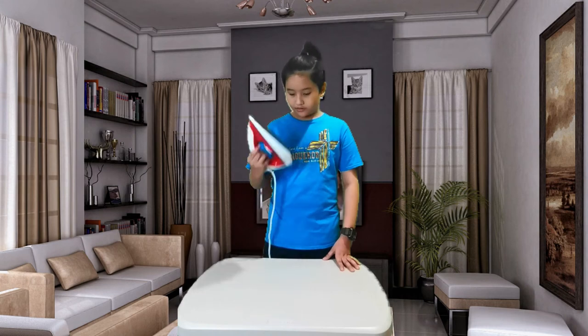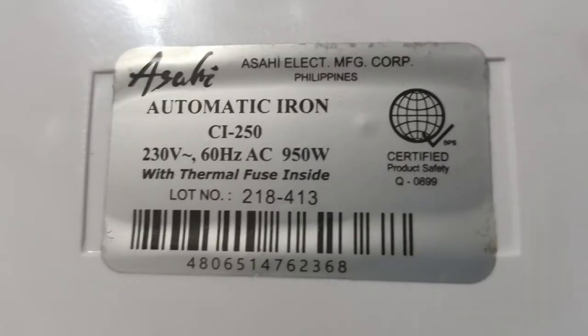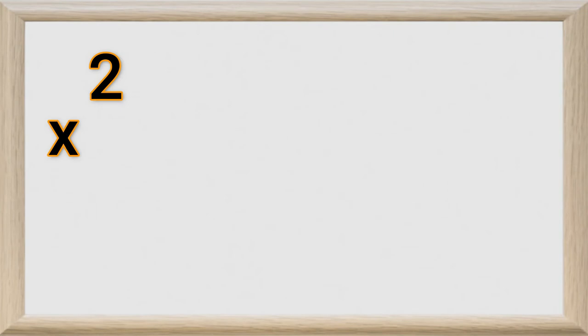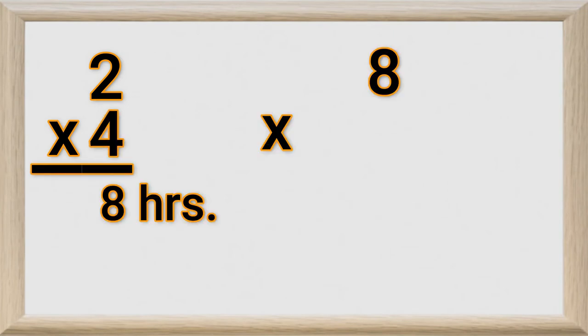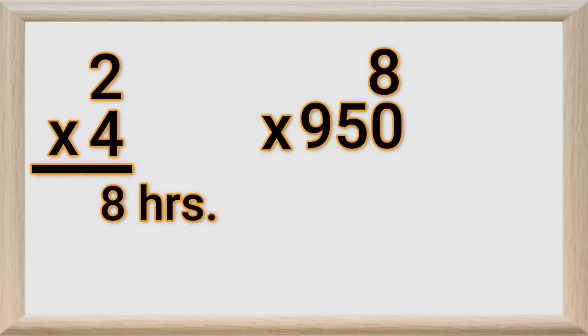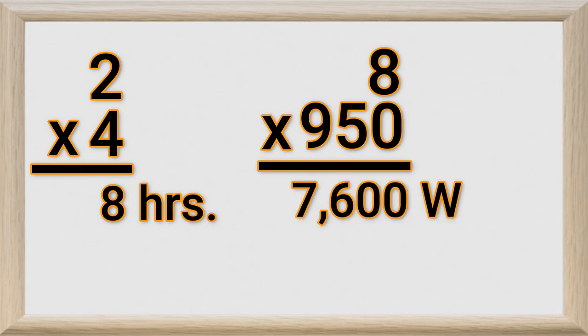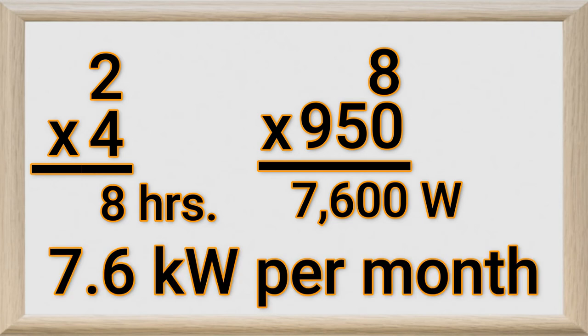We will do the same for the flat iron labeled 950 watts per hour. We use our iron weekly for roughly two hours because we only do online classes and my dad works at home, so there is no need to press clothes and uniforms that much. On average, a month has four weeks, so 2 hours multiplied by 4 weeks equals 8 hours, multiplied by 950 watts, giving 7,600 watts or 7.6 kilowatts per month.